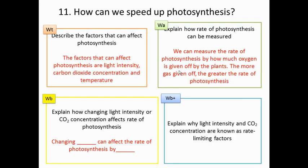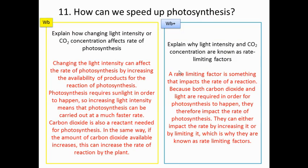The factors that can affect photosynthesis are light intensity, carbon dioxide concentration, and temperature. We can measure the rate of photosynthesis by how much oxygen is given off by the plant — the more gas given off, the greater the rate. Changing the light intensity can affect the rate by increasing the availability of reactants. Photosynthesis requires sunlight, so increasing light intensity means it can be carried out at a much faster rate. Carbon dioxide is also a reactant needed for photosynthesis — if the amount of CO2 available increases, this will increase the rate of photosynthesis by the plant.